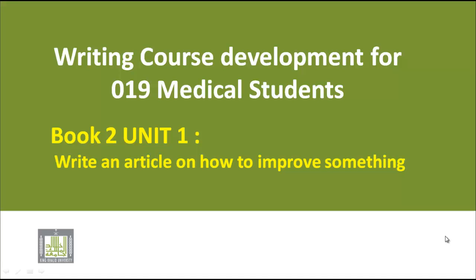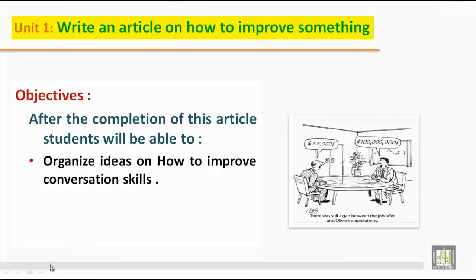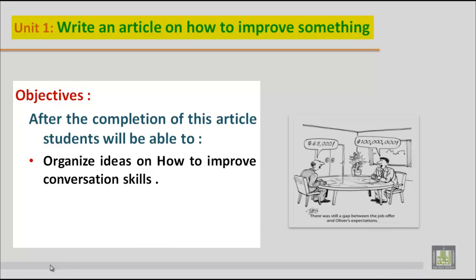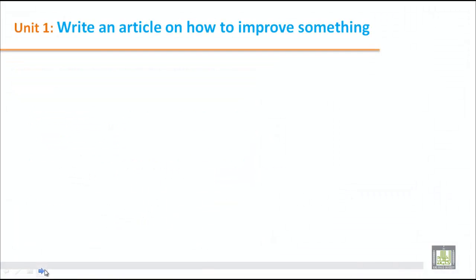Bismillahirrahmanirrahim. Writing course development for zero nineteen medical students, book two, unit one: write an article on how to improve something. Dear students, today we will practice how to improve your conversational skill. Let's look at the objectives of this unit. After the completion of this article, students will be able to organize ideas on how to improve conversational skills.